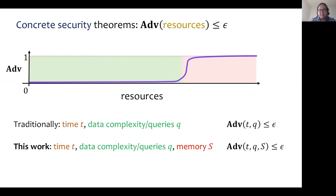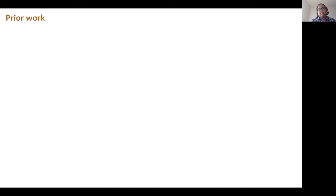This is important because the feasibility of a certain attack might be seriously affected by the amount of available memory. Hence, concrete security analysis should take this into account. Even though this question is clearly fundamental, only very recently have we seen some prior work on this.